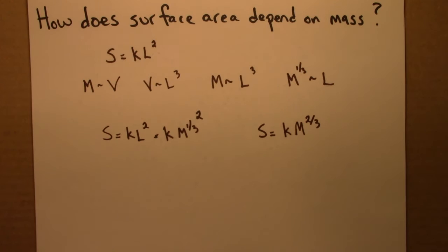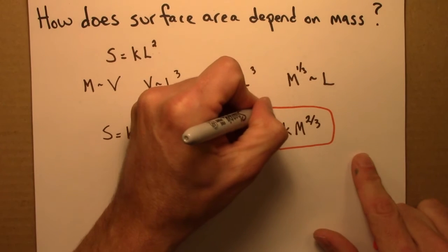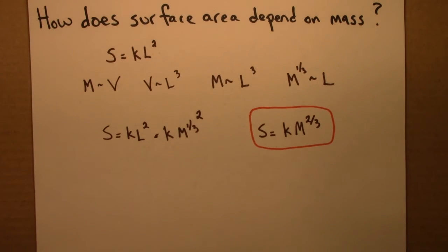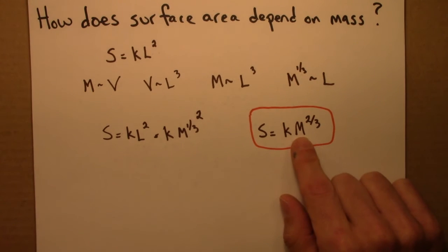So this tells us how surface area depends on mass. If you double something's mass, its surface area would go up by 2 to the 2 thirds power.